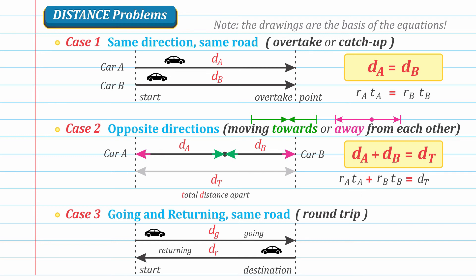we can conclude that since the object will be taking the same road, the distance going or D sub G should be equal to the distance returning or D sub R.